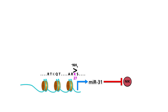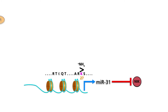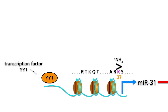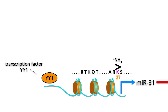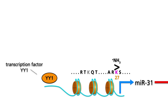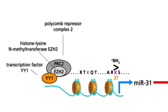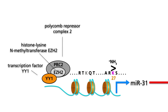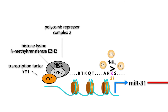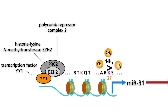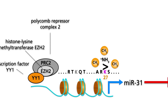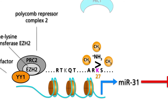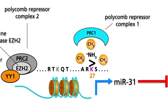Upstream of the MIR31 region, binding motifs for the YY1 transcription factor are present. The YY1 transcription factor can recruit the polycomb repressor complex II, which contains the methyltransferase EZH2. When the PRC2 repressor complex binds to the YY1 transcription factor, the lysine residue in position 27 of histone III is trimethylated. It is known that trimethylated lysine in position 27 of histone III recruits the polycomb repressor complex I, abbreviated PRC1, leading to a compaction of chromatin.